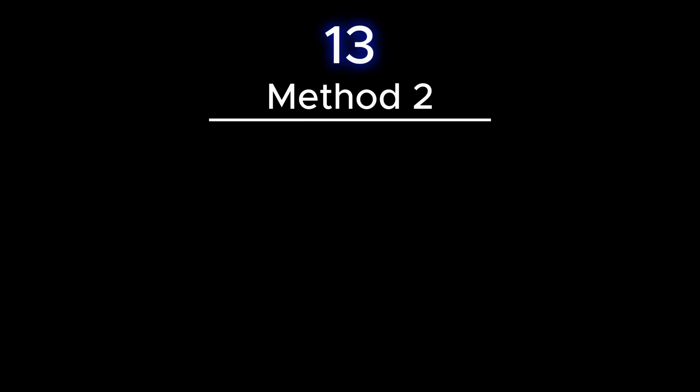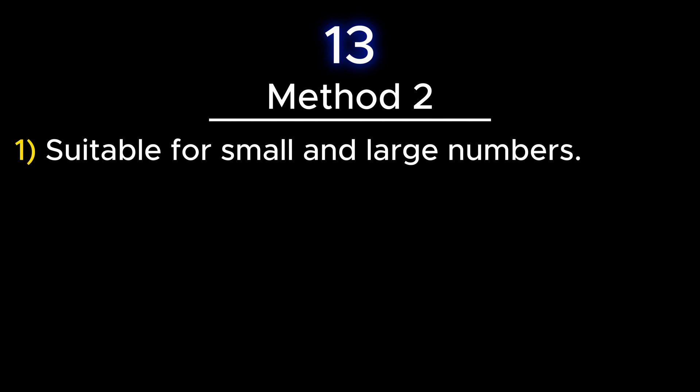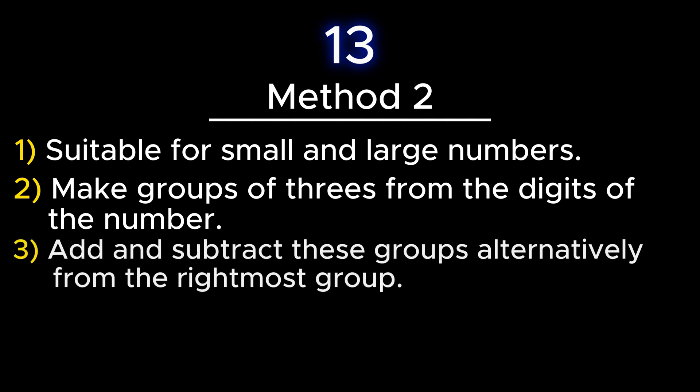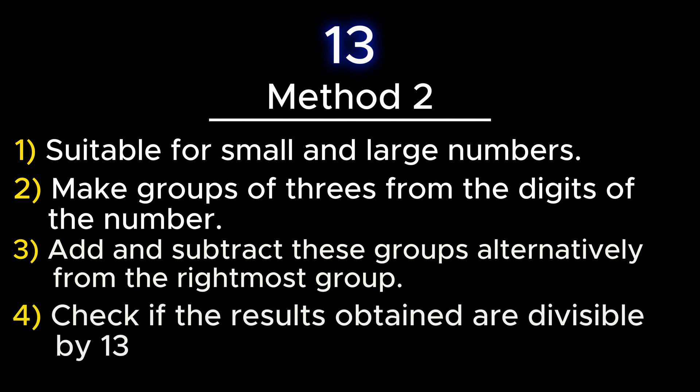The second test is suitable for large numbers, that is numbers with more than 5 digits, and it reduces the steps involved in the first test. To check whether a number is divisible by 13, the digits of the given number are grouped in 3s. Afterwards, subtraction and addition are applied alternately to these groups from the rightmost group. If the result is divisible by 13, then the given number is also divisible by 13.